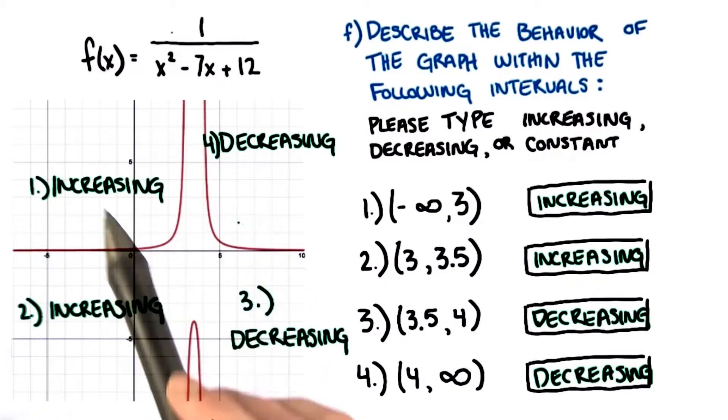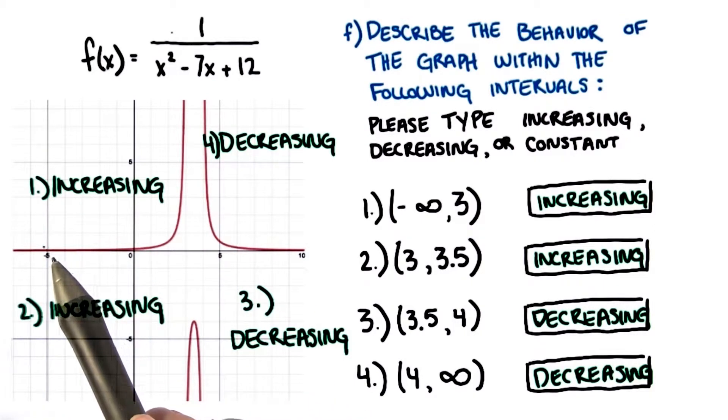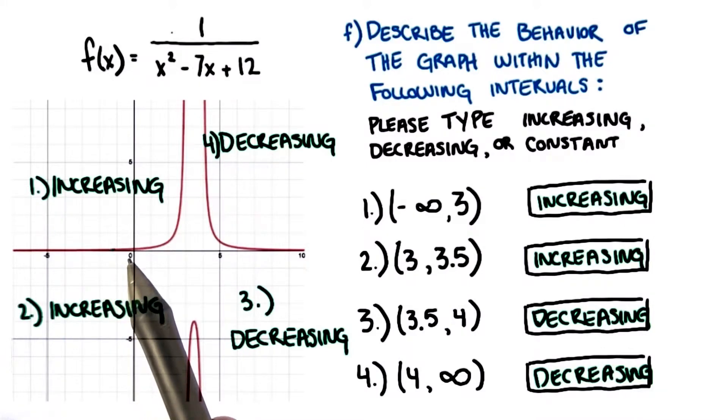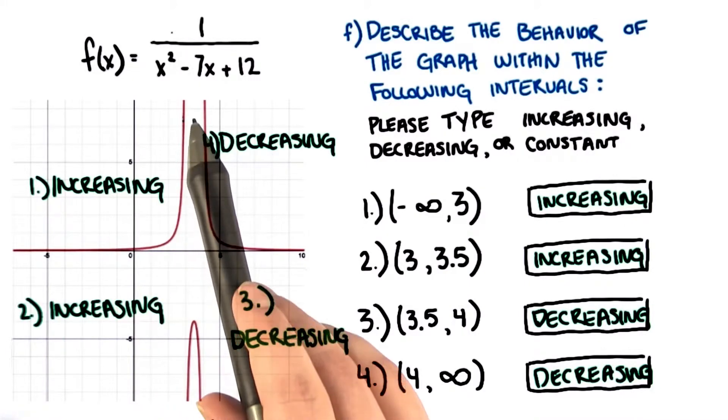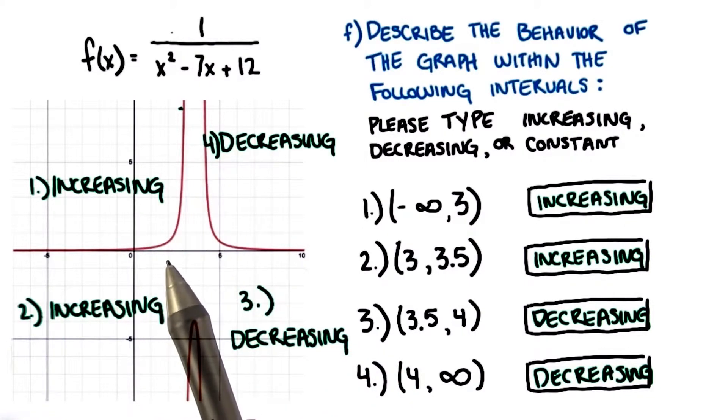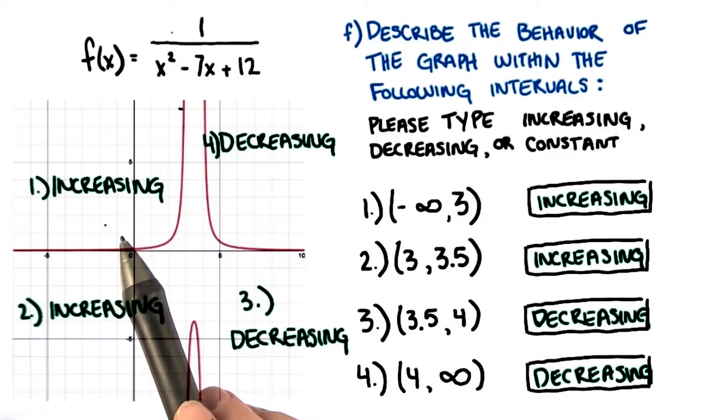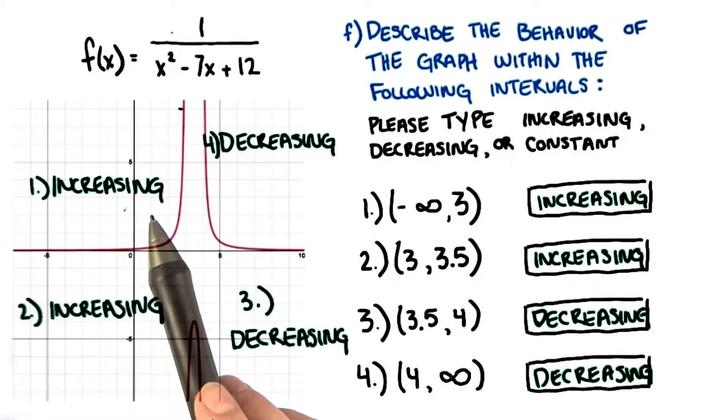In the first region, we see the graph starts off at the horizontal asymptote y equals 0 and rises to the vertical asymptote of x equals 3. We can also say it is increasing as the y value of each point as we move right is greater than the y value of the point before.